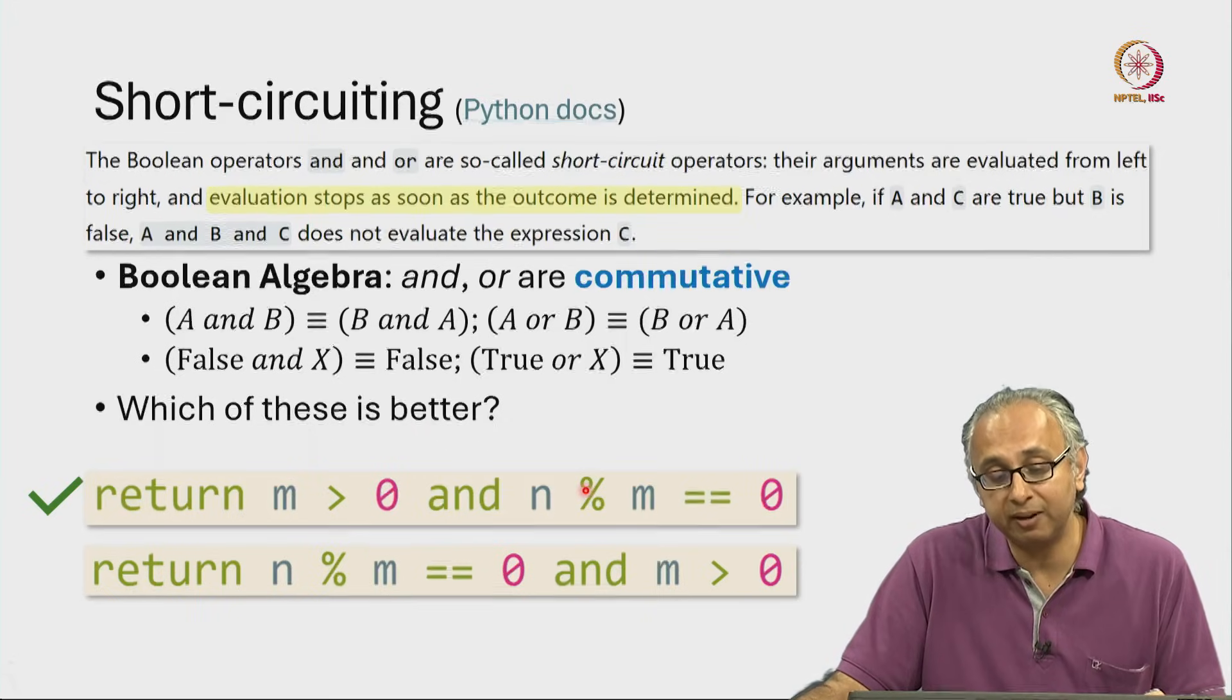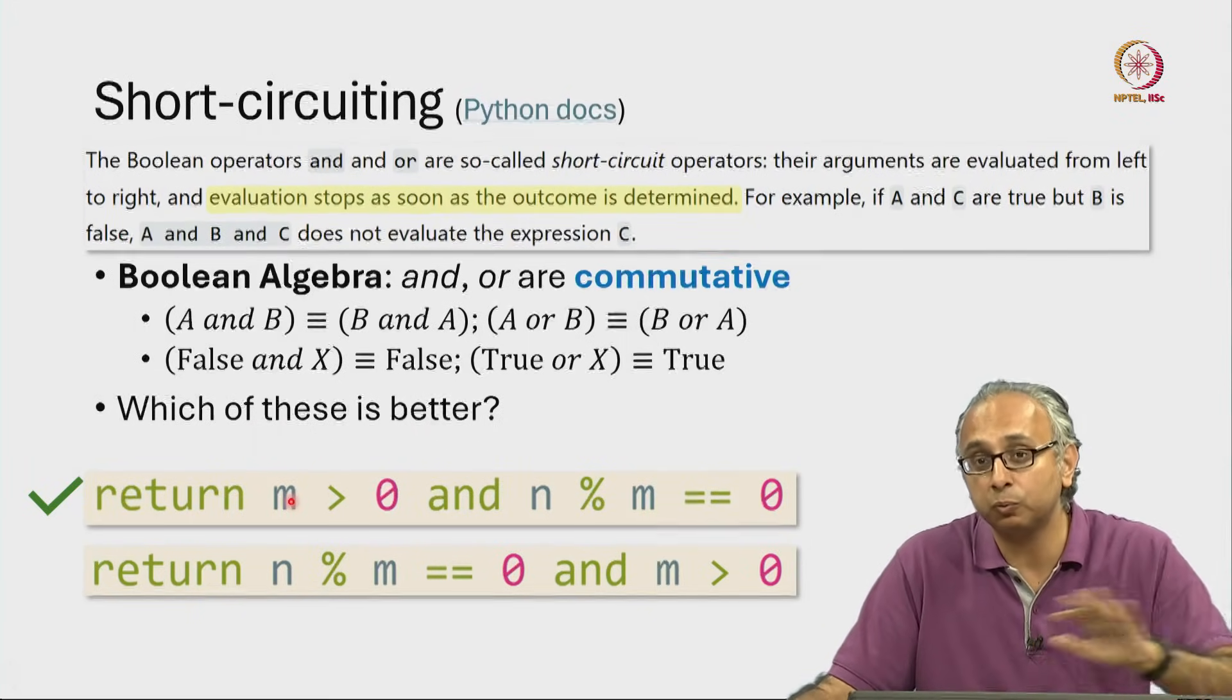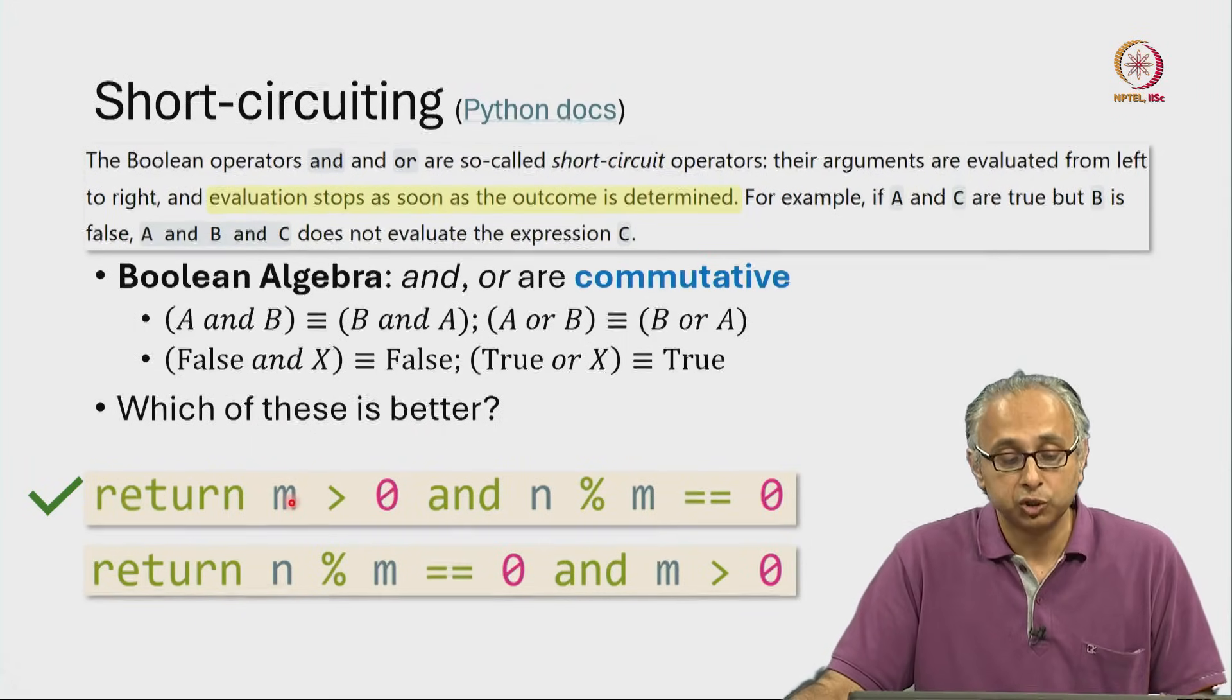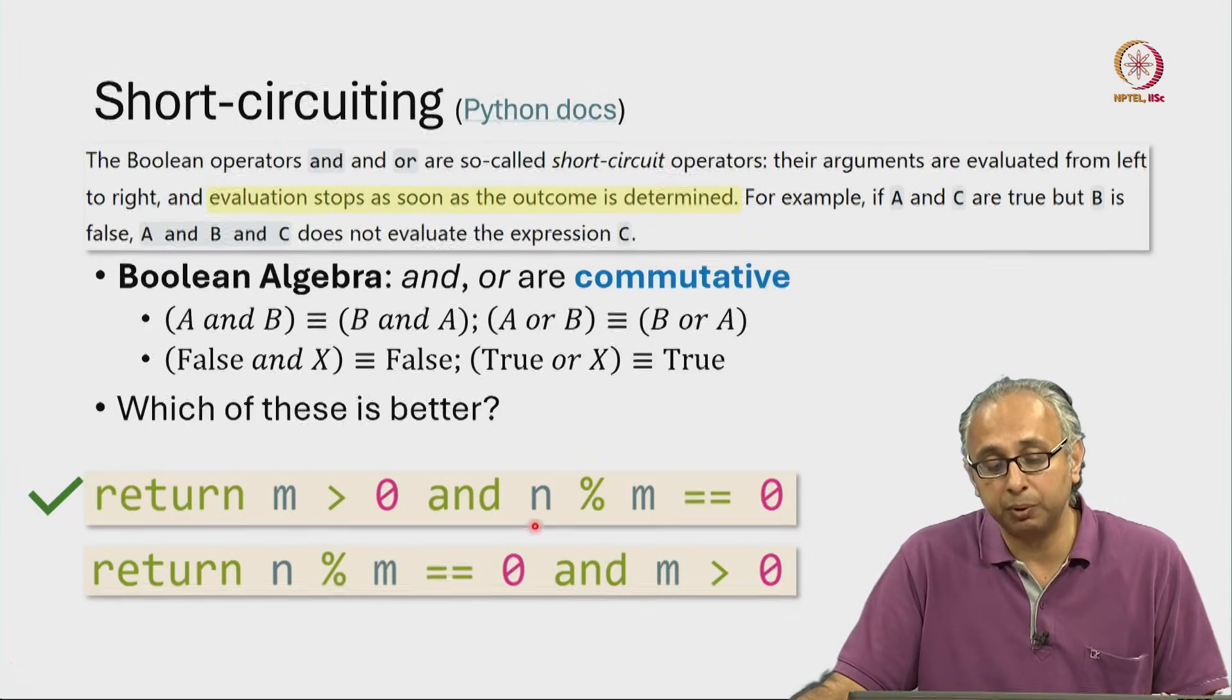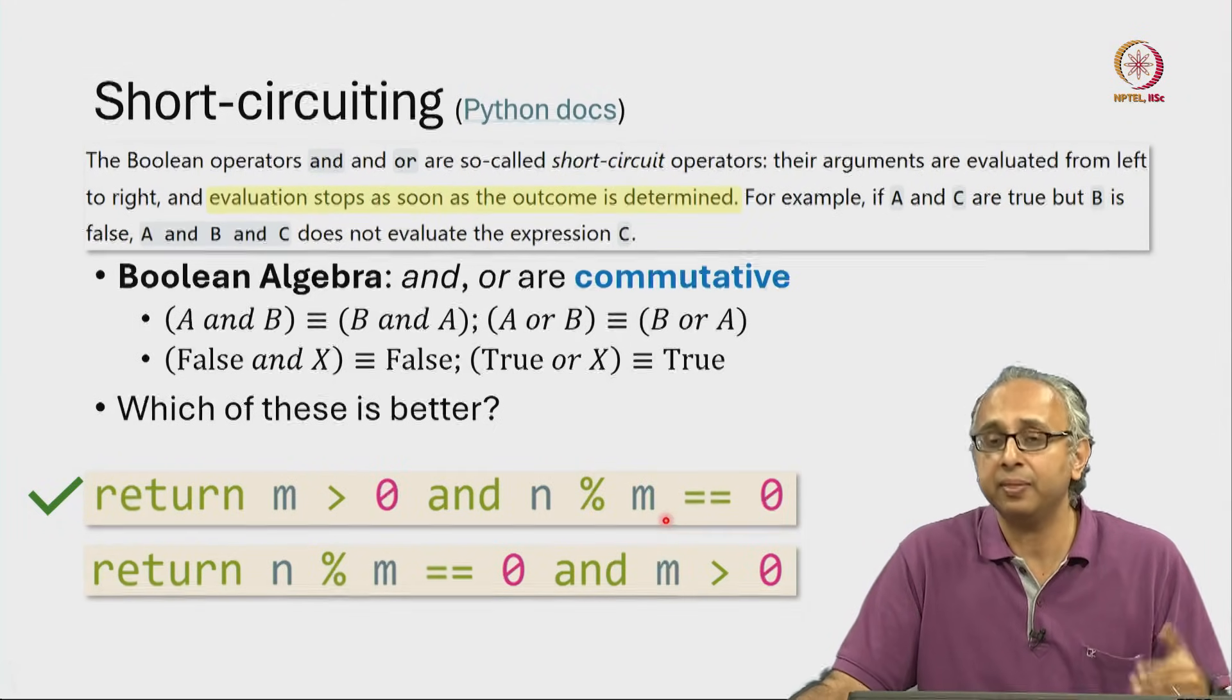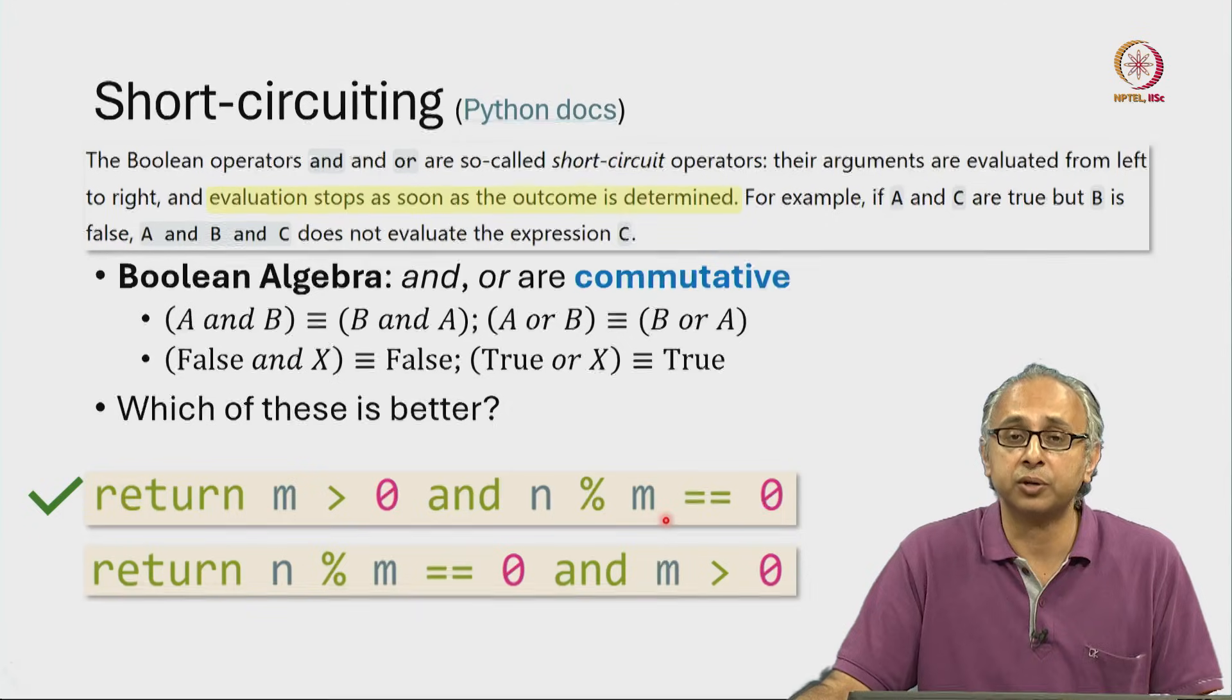It is only then we will evaluate. As soon as the first expression is false, we will no longer be evaluating it. So, as long as m is greater than zero, we will come here and then we will divide, and then it is okay to divide because m is not zero. It is positive.